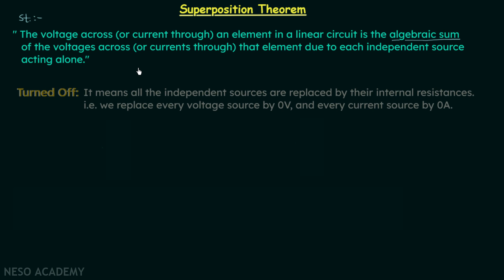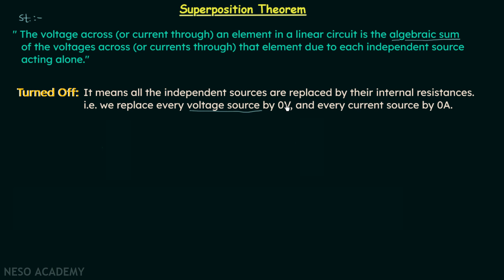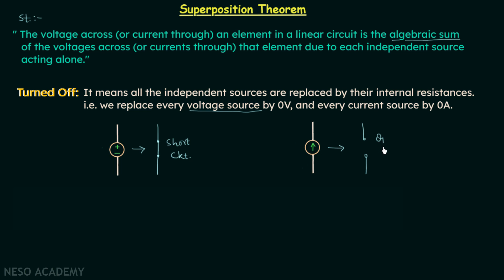What do we mean by turned off? Turned off means all the independent sources are replaced by their internal resistances — that is, we replace every voltage source by zero volts, which is a short circuit, and every current source by zero amperes, which is an open circuit. For example, if we want to turn off a voltage source we simply short circuit it, and if we have a current source and want to turn it off, we open circuit it.